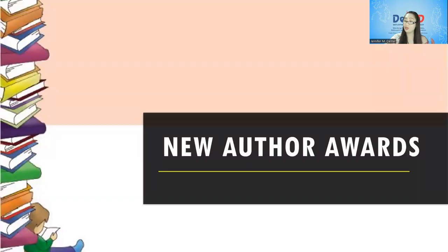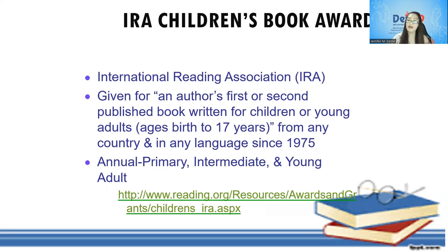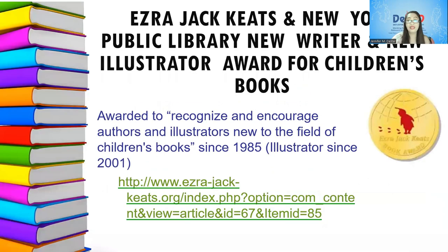Then we have the New Authors Awards. The IRA Children's Book Award is given by the International Reading Association for an author's first or second published book written for children or young adults, ages from birth to 17 years old, from any country or in any language since 1975. Given annually for primary, intermediate, and young adult categories.